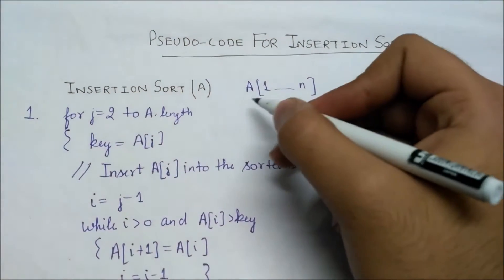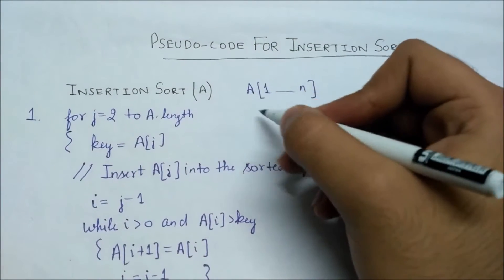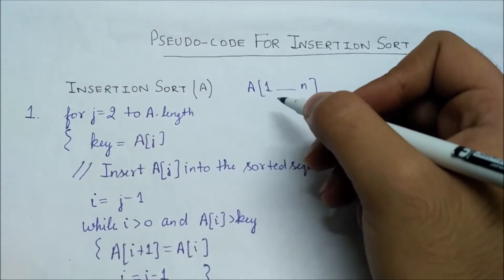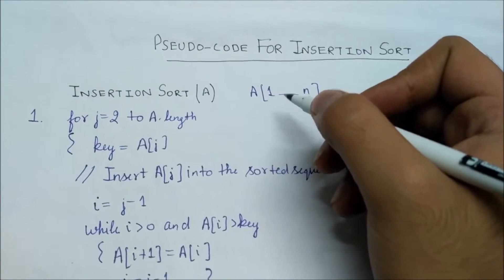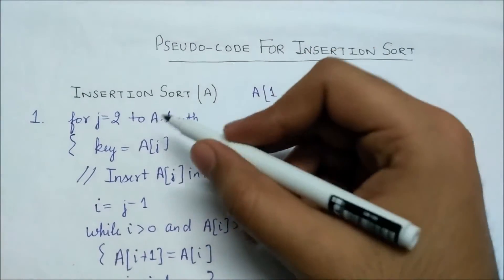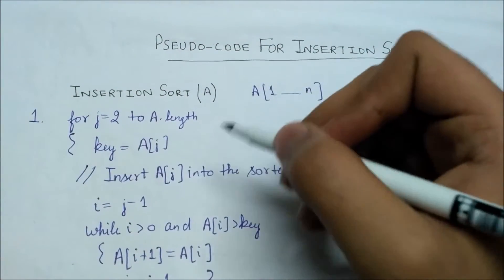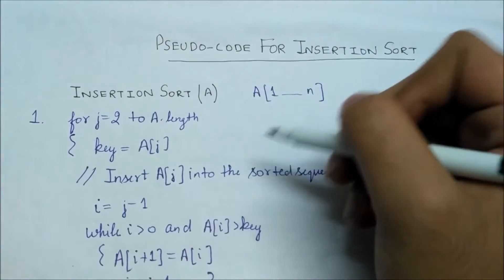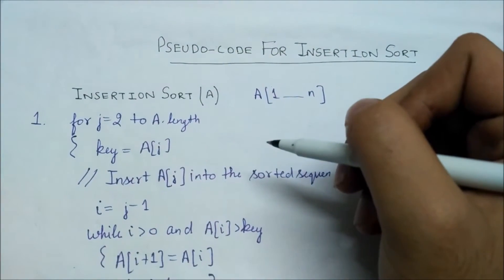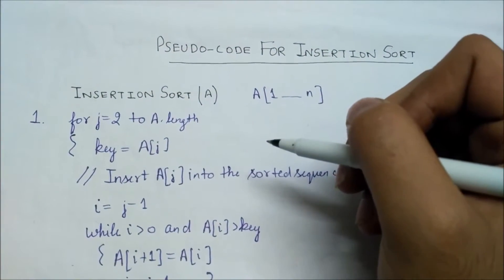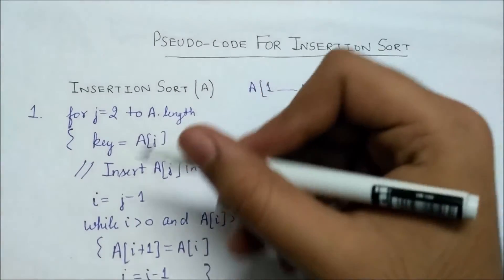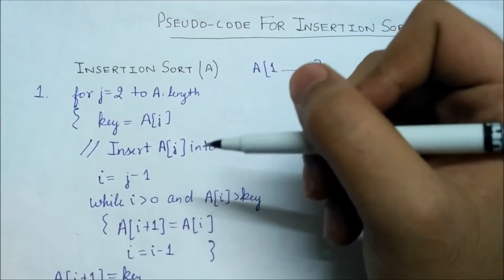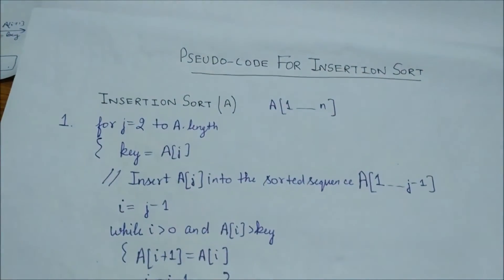Now we will discuss the pseudocode for insertion sort. Insertion sort takes as a parameter an array that contains a sequence of length n to be sorted. The algorithm sorts the input numbers in place — it rearranges the numbers within the array A — which is why it is also called an in-place algorithm.